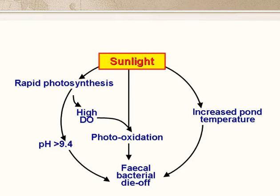The sun clearly has the most important role. Solar energy heats up the pond so the faecal bacteria die more quickly, and it provides the raw energy for photosynthesis. Rapid photosynthesis raises the pH to above 9.4, which leads to rapid faecal bacterial die-off. And finally, the combination of high visible light intensity and high dissolved oxygen leads to rapid photo-oxidative death of the faecal bacteria.